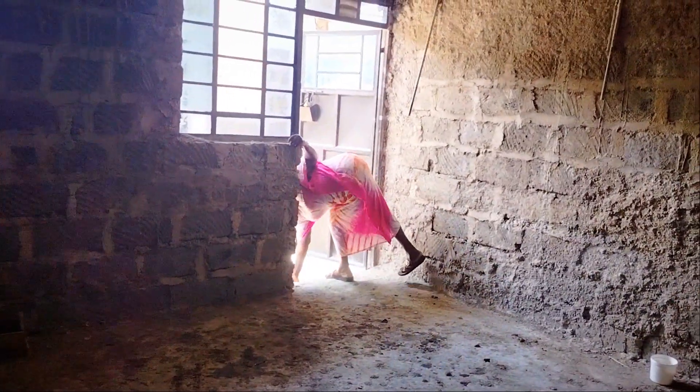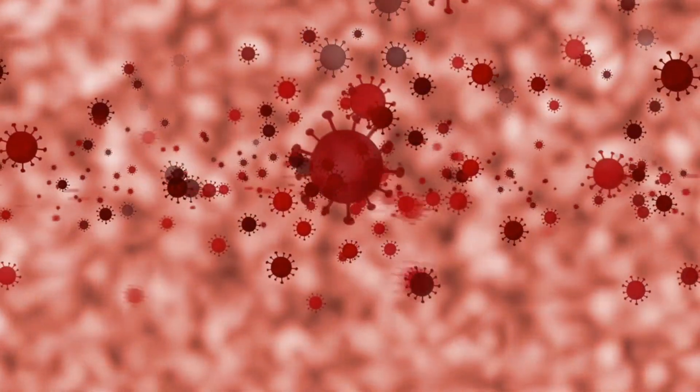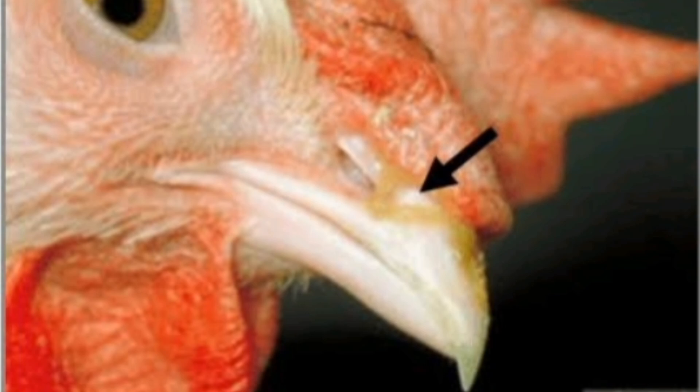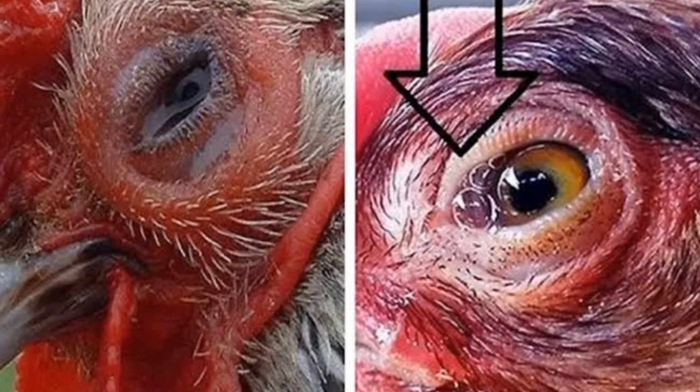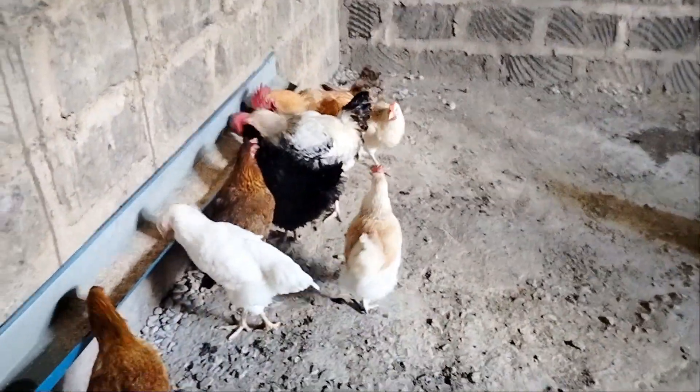Another disease is infectious coryza. This is a respiratory disease in chickens caused by bacteria. Its symptoms include nasal discharge, sneezing, facial swelling around the eyes and upper respiratory system, difficulty in breathing, decreased egg production, and coughing.